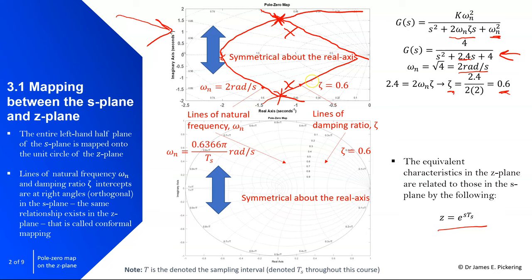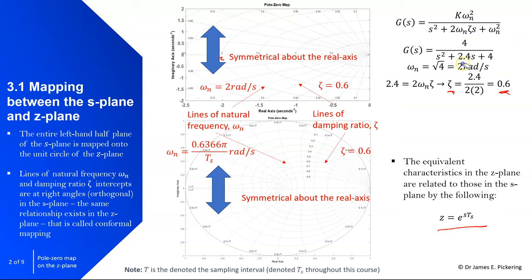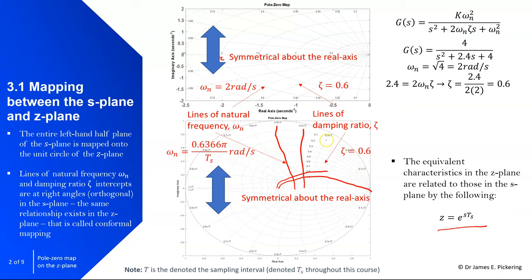That exact mapping occurs in the Z-plane. The radius of the Z-plane is 1 and it is symmetrical about the real axis. You want your poles to be inside the unit circle — outside will give you an unstable system response. Lines of natural frequency and damping ratio map on exactly. The damping ratios from the unit circle inward are 0.9, 0.8, 0.7, down to 0.1, with a value of 0 on the unit circle giving an undamped system. Lines of natural frequency go around the circle as multiples of pi over Ts, so your pole location in the Z-plane is a function of the sample interval.